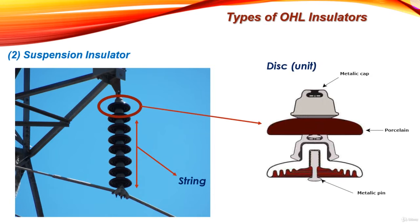Each unit consists of a metallic cap, porcelain as the insulator material, and a metallic pin. The conductor is suspended at the bottom end of the string by means of a metallic pin, while the other end of the string is secured to the cross arm of the tower by means of a metallic cap. The metallic pin and cap are also used to connect the units with each other to form one insulator string.